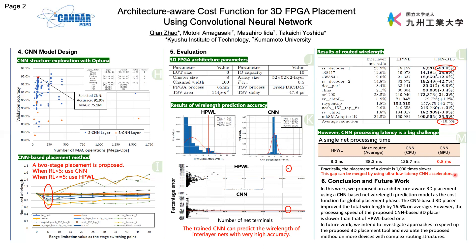In conclusion, we proposed an architecture-aware 3D placement method using a CNN-based net wire length prediction model as a cost function for the global placement phase. The CNN-based 3D placer improves total wire length by 16.5% on average, with up to 53% improvement in the best case. However, processing speed remains slower than HPWL-based placement. In future work, we intend to investigate approaches to speed up the proposed 3D placement tool and evaluate it on more devices with complex routing structures. Thank you for your attention.